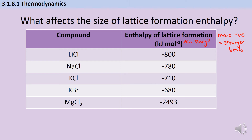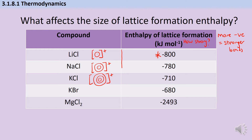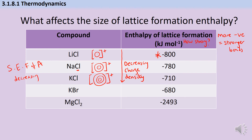There are a couple of things that can influence the size of this enthalpy of lattice formation. If we look at the first three compounds in this table — all group 1 chlorides — a lithium ion has a single shell and a single positive charge, sodium has a second shell with the same one positive charge, and potassium has three shells with that single positive charge. Lithium chloride has the most exothermic or most negative enthalpy of lattice formation. As we go down the group, we have the same charge but increasingly larger ions, and therefore decreasing charge density, meaning the electrostatic force of attraction between the cation and the chloride ion becomes weaker.